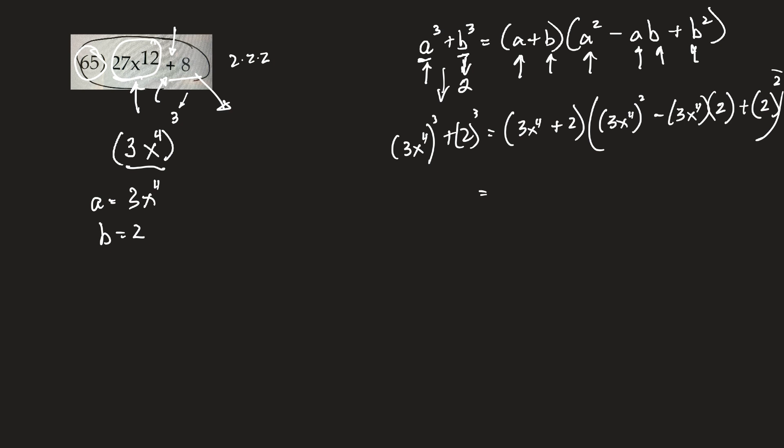All right, so this first bracket, I'll just have 3x to the 4th plus 2. This next one, if I simplify that, I expand that bracket, that'll come out to 9x to the 8th minus,